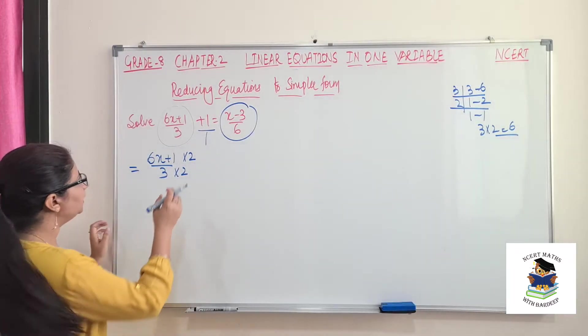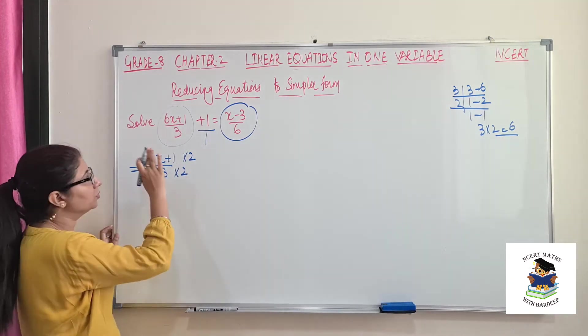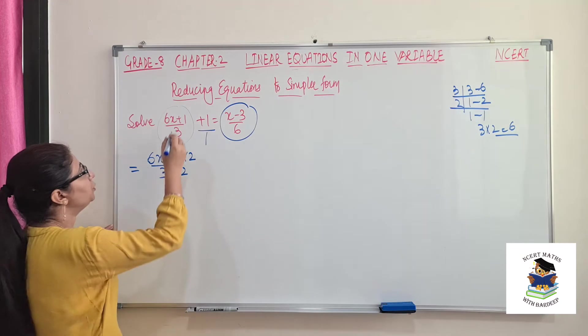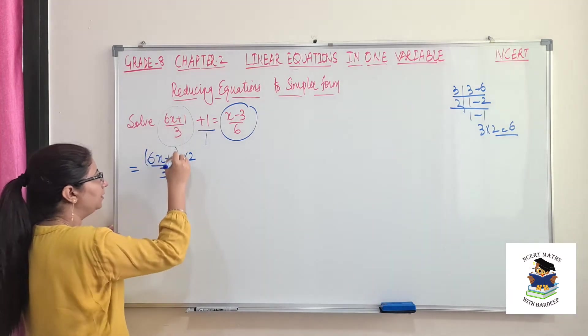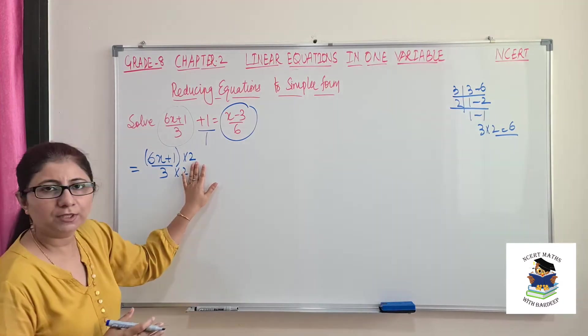Because mostly students will do this multiply by 2 without bracket. See, in this way. So when you open this, this 2 will come here, and this 2 will not come here. So this is wrong. So what you should do is, whatever your numerator is, first put that in bracket and then multiply with the given number.